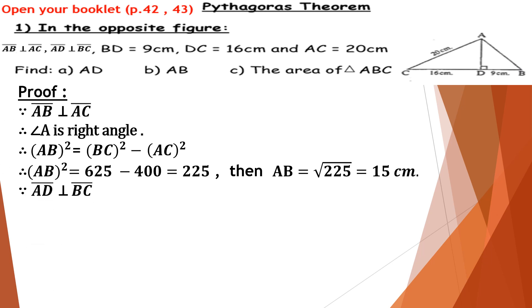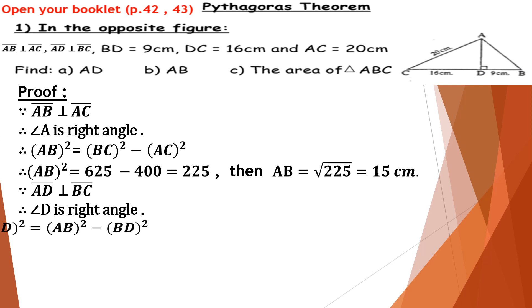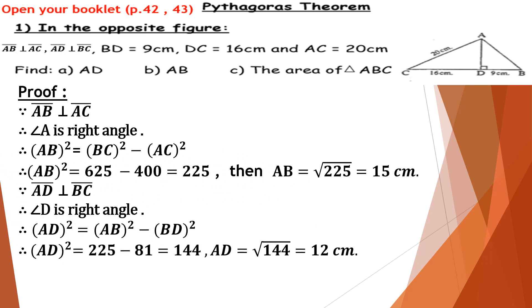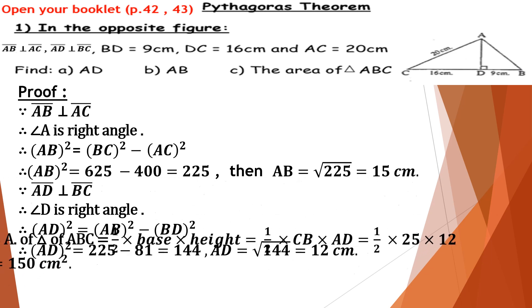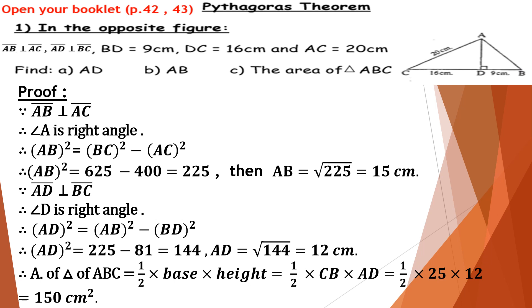Since AD is perpendicular to BC, angle D is a right angle. Therefore, AD² = AB² − BD² = 225 − 81 = 144, so AD = √144 = 12 cm. Therefore, the area of triangle ABC = ½ × base × height = ½ × CB × AD = ½ × 25 × 12 = 150 cm².